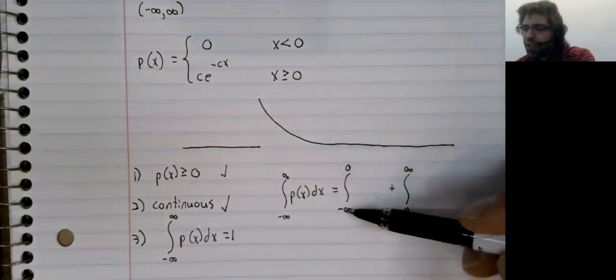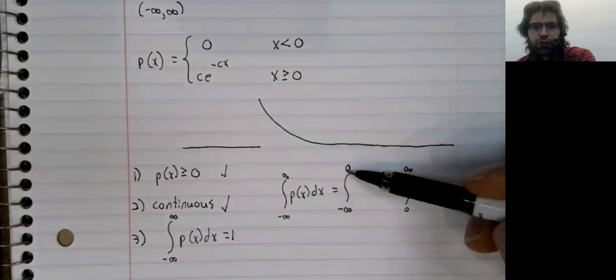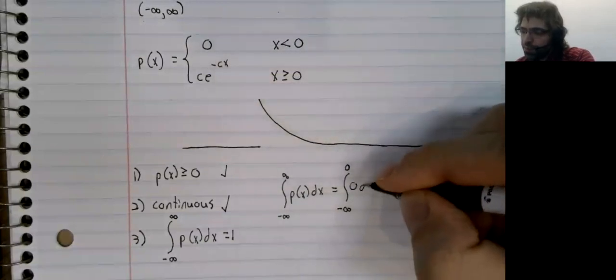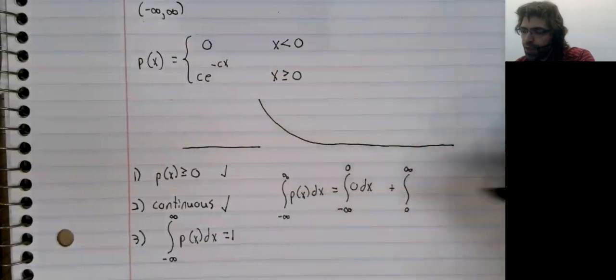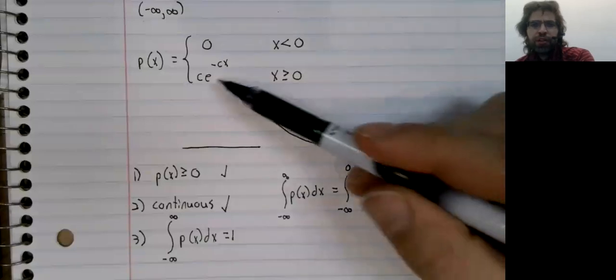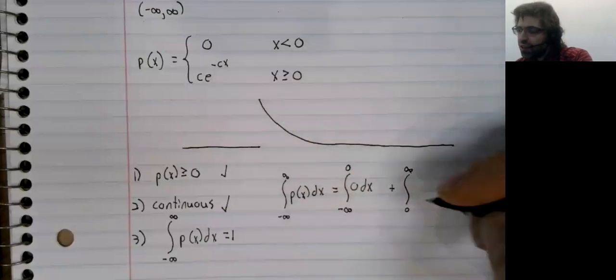So from negative infinity to zero, p of x is zero. From zero to infinity, p of x is this.